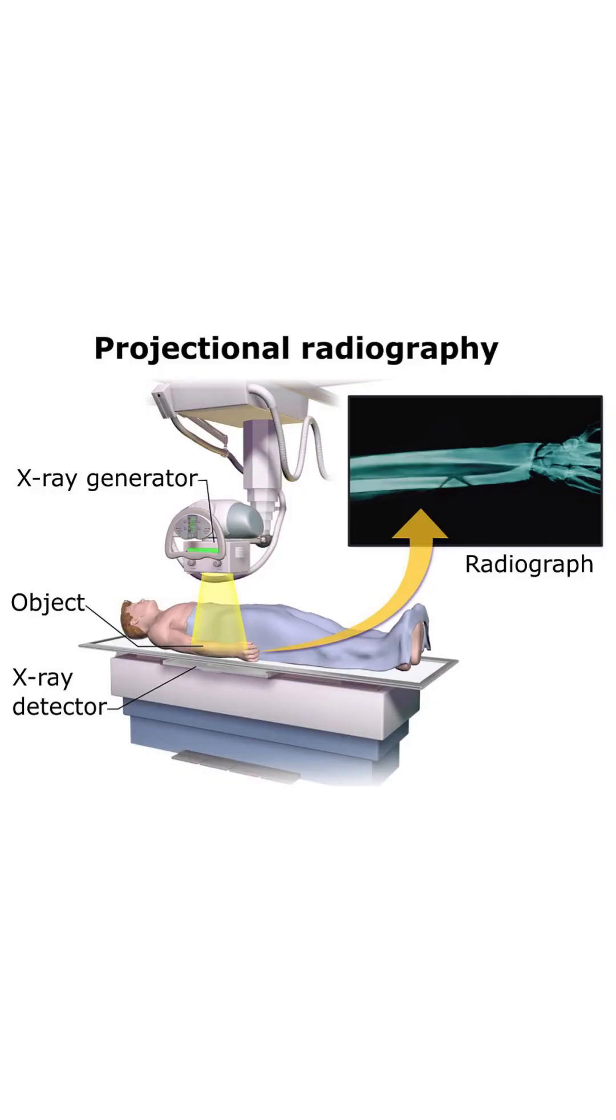When traveling through a patient, different tissues absorb different amounts of x-rays. The x-rays which make it through to the other side of the patient hit a plate known as the x-ray detector or the image detector.